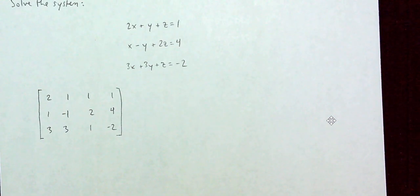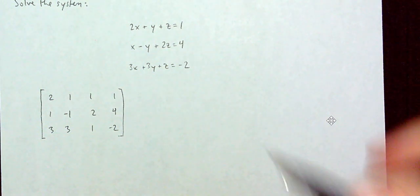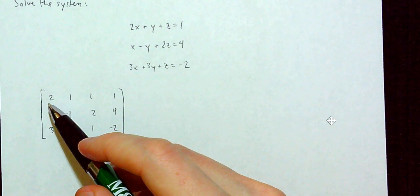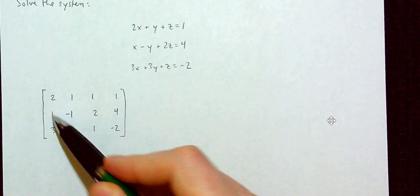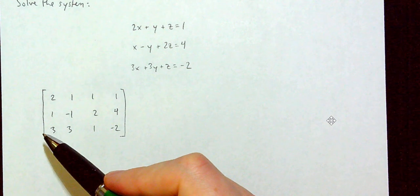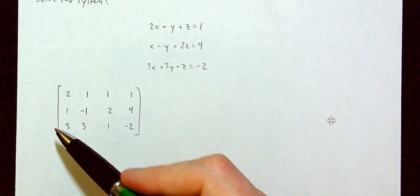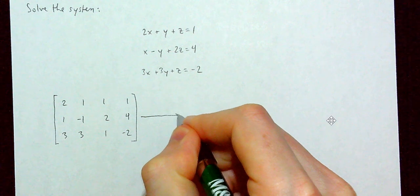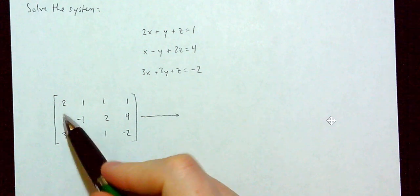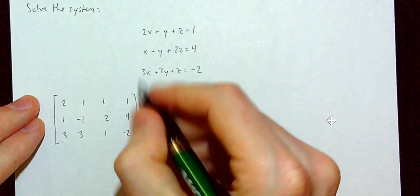Now we get this into row-reduced echelon form. At the first checkpoint, I want my first column to look like 1, 0, 0. I'm going to start by switching rows 1 and 2, since that gives me a 1 up top. So R1 and R2 get switched.